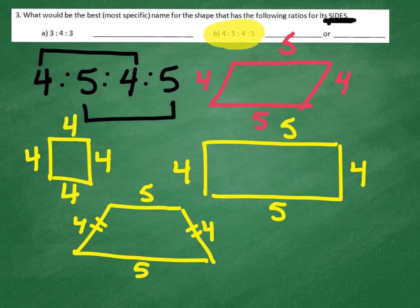So it looks like our two solutions are the parallelogram and the rectangle, because of the order 4-5-4-5 making opposite sides equal.